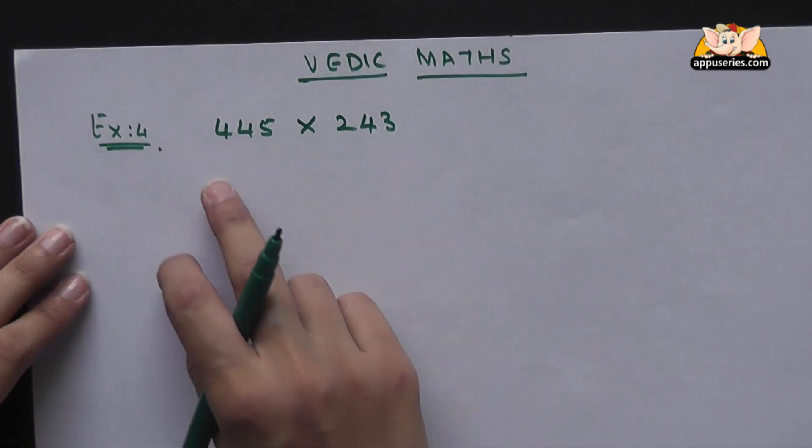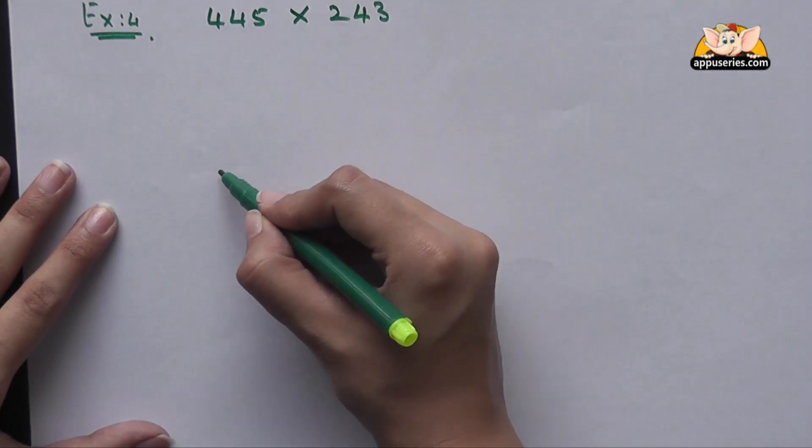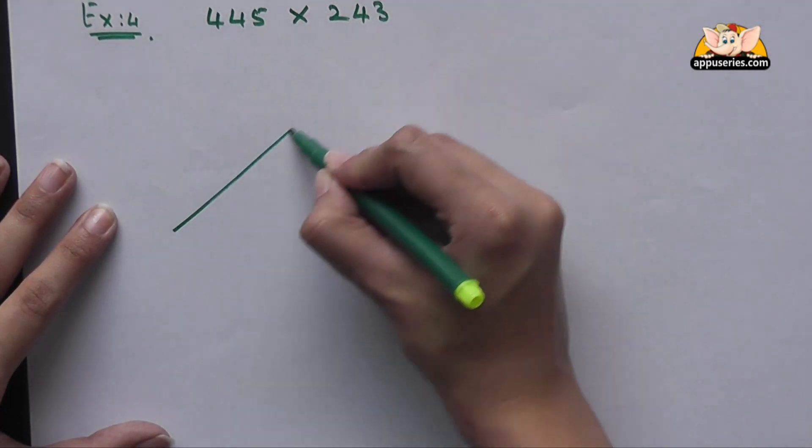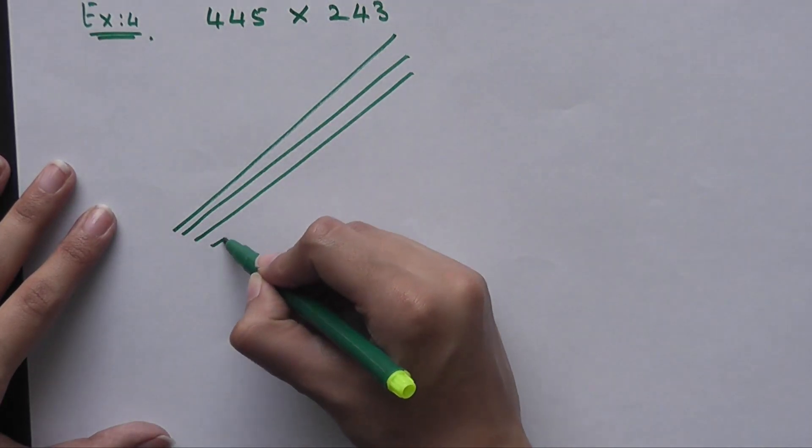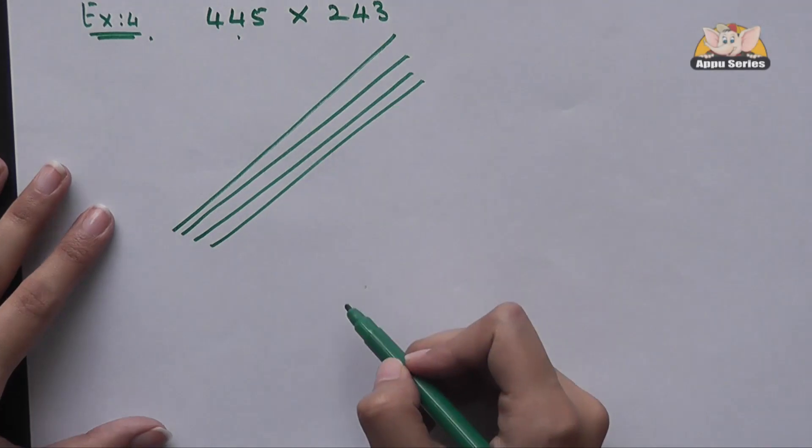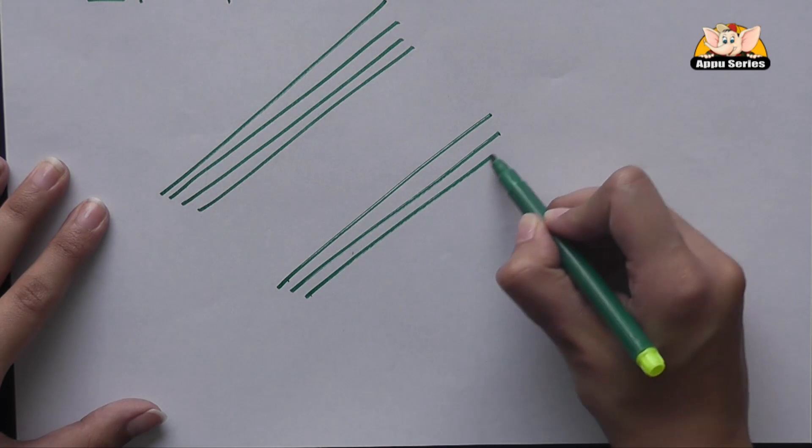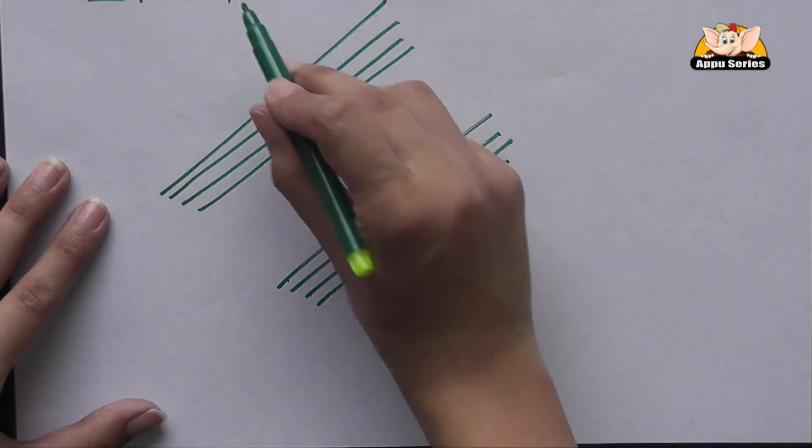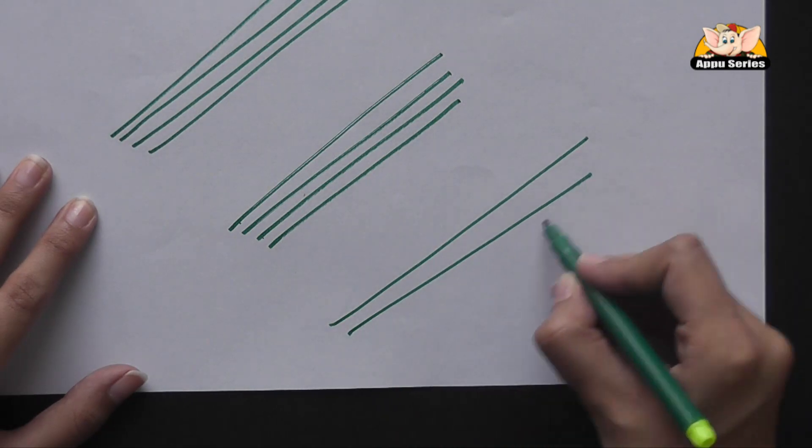We'll start with a number on the left, that is 4, and we'll draw 4 diagonal lines here. Then we'll draw the next number, which is 4 again. And then we'll draw 5 lines for 5 here.